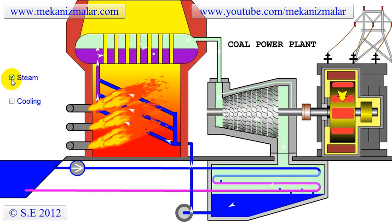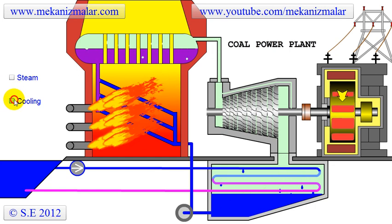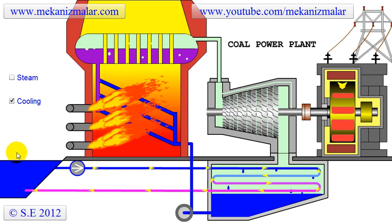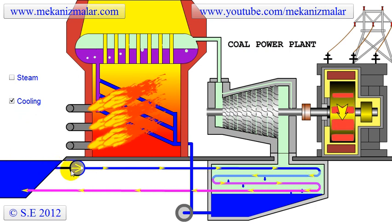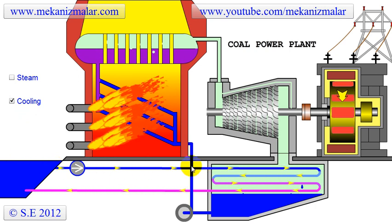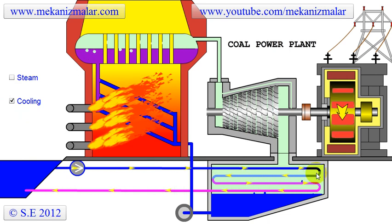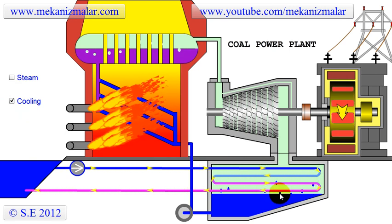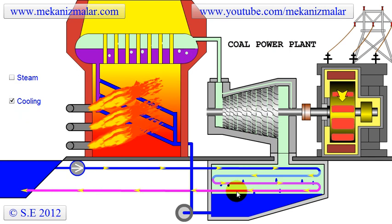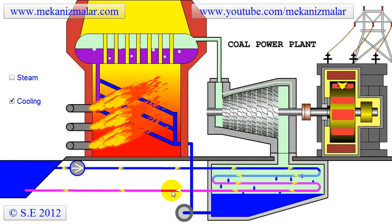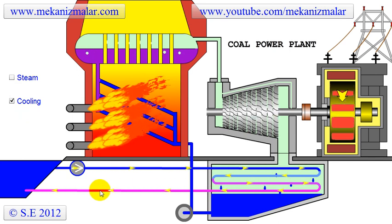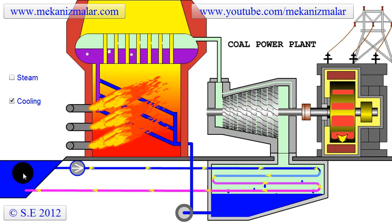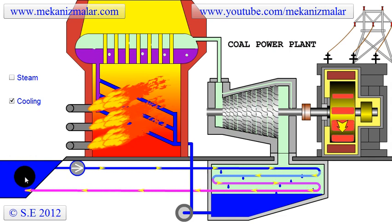Now let's discuss the second cycle, the open loop cooling cycle, which starts by pumping cold water from the upstream section of the river into the condenser inside the steel tubes. While saturated steam is condensed to water, the water from the river is heated. The heated water is then dispensed to the downstream section of the river.